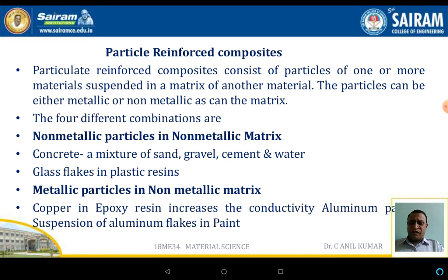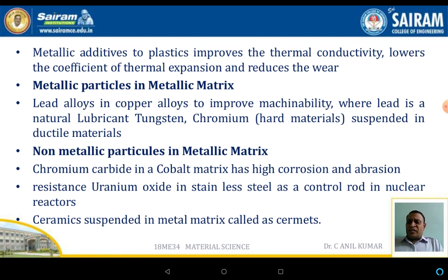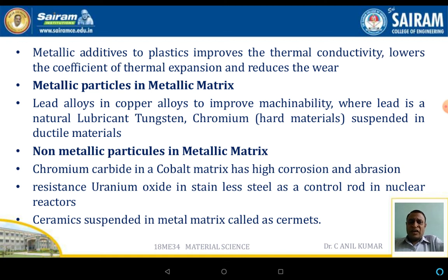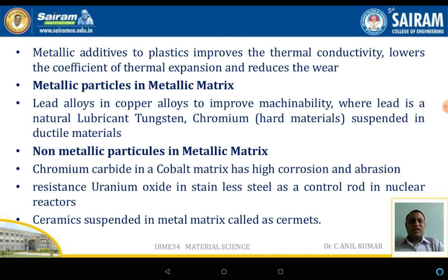Second: metallic particles in a non-metallic matrix, like copper in epoxy resins which increases conductivity, or aluminum flakes in paints. Third: metallic particles in a metallic matrix, like lead alloy in copper alloy that improves machinability, where lead is a natural lubricant, or tungsten and chromium suspended in an MMC matrix which is a very hard material. Fourth: non-metallic particles in a metallic composite, such as chromium carbides in a cobalt matrix for high corrosion and abrasion resistance, or uranium oxide in stainless steel used as control rods in nuclear reactors - ceramics suspended in a metal matrix.